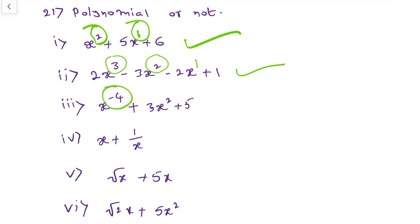Here, power is minus 4. Minus 4 is not a whole number, so this is not a polynomial. If even one power is not a whole number, there is no need to check the remaining terms.